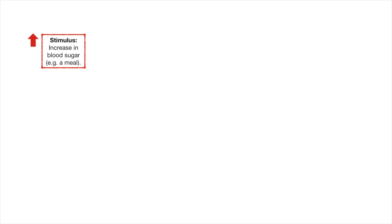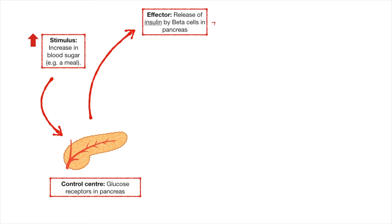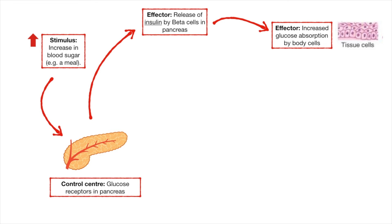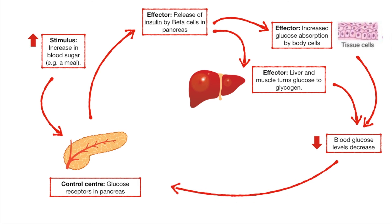Starting with the stimulus: you had a meal, and now your blood sugar levels are higher than the set point. In response to that increase, your body is going to produce insulin. The control center is the pancreas itself — there are glucose receptors within the pancreas which stimulate the production of insulin by the beta cells. This will in turn increase the absorption of glucose by body cells and also increase the production of glycogen by both the liver and muscle cells. Once blood glucose returns to the set point, the pancreas stops producing insulin.